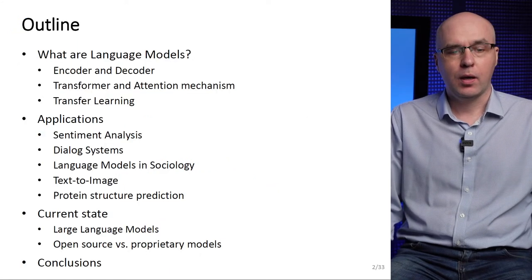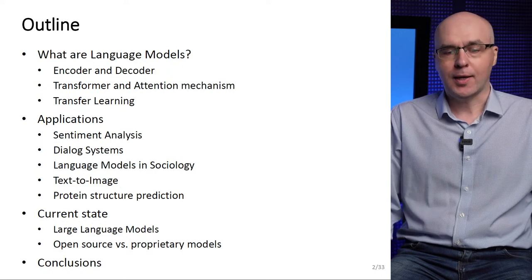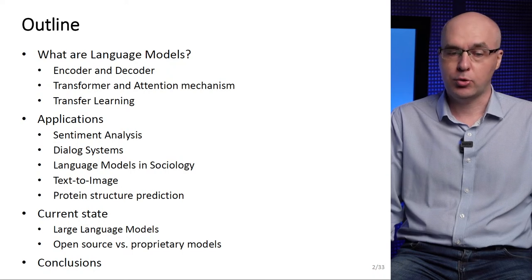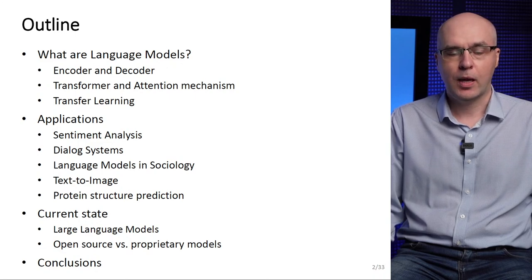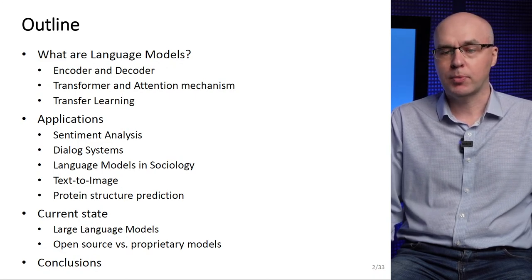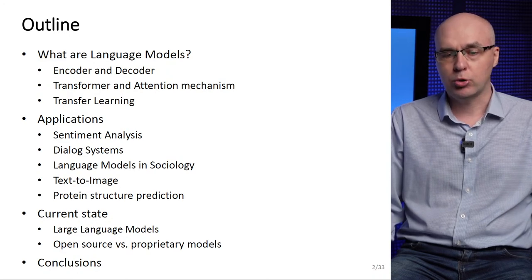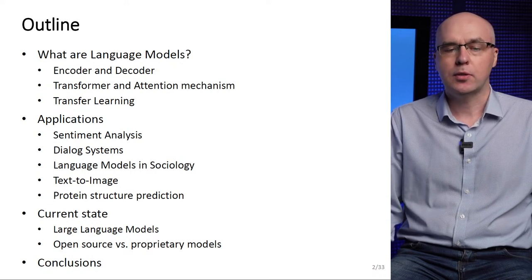We have the following plan. First, I will tell you what are language models and what are encoder and decoder. We will consider the main architecture of modern language models — the transformer — and analyze the attention mechanism underlying it. Transfer learning is a common way to apply pre-trained language models to solve new problems. We will look at some of the most prominent applications, including sentiment analysis, dialogue systems including ChatGPT, sociology, image generation from textual descriptions, and protein structure prediction.